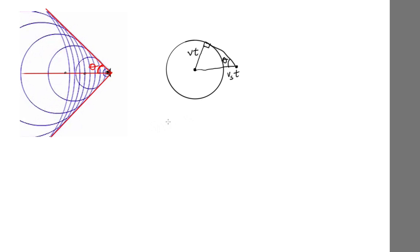And so sine theta is equal to opposite v t over v s t. And you can see the t's cancel out. So that's equal to v over v s. So we've now come up with an expression for sine theta, the angle that our shock wave makes with the path of the moving object, the source of the sound.